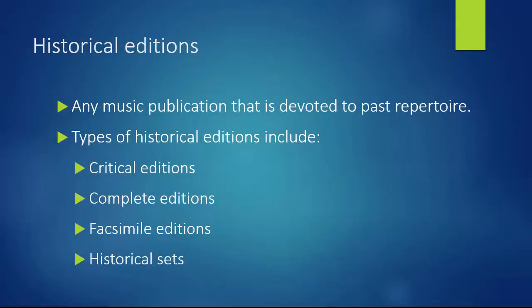Historical editions are classified as any music publication that is devoted to a past repertory. There are various types of historical editions to be found in the library, including critical editions, complete editions, facsimile editions, and historical sets.